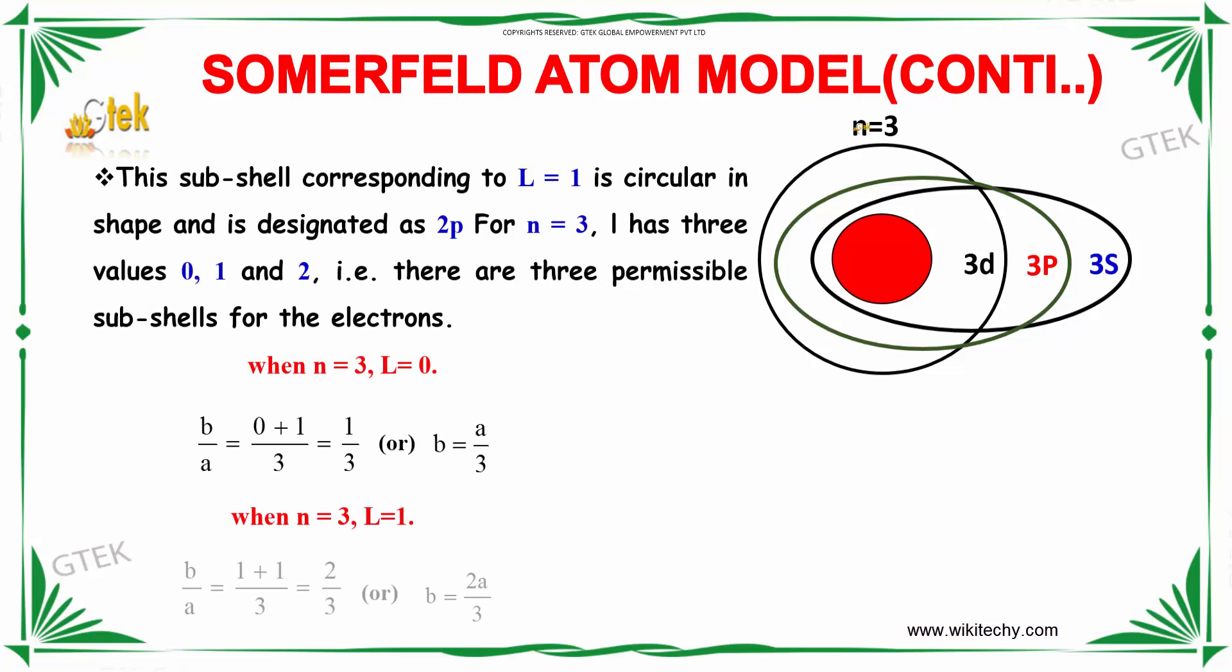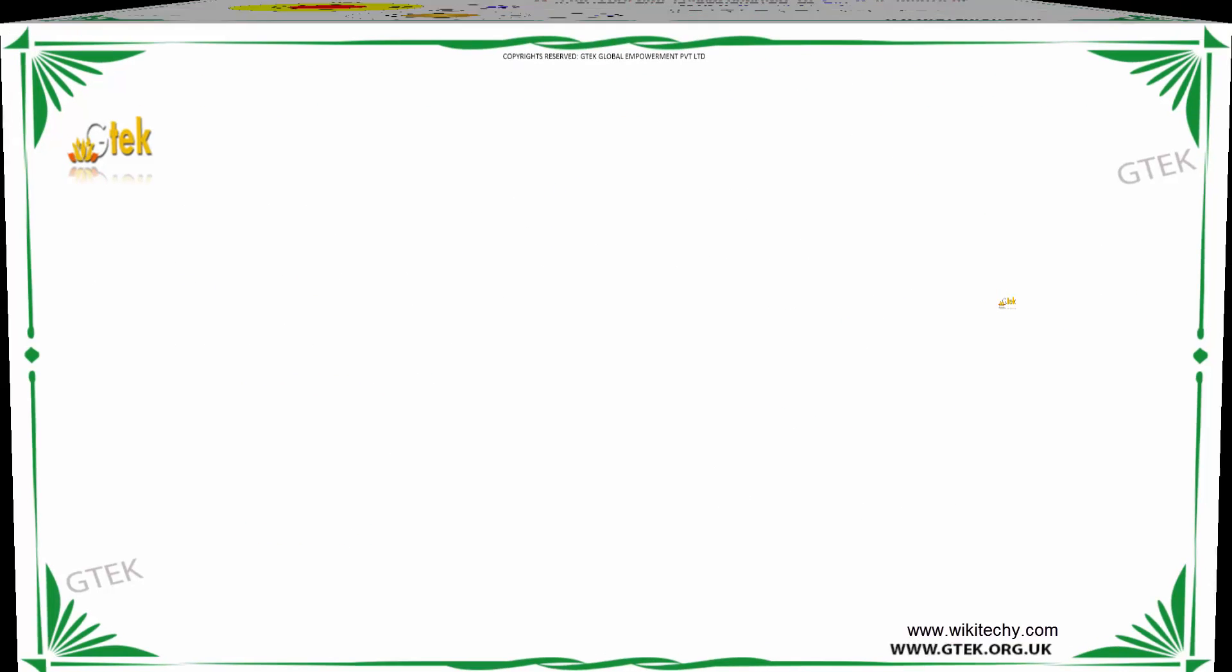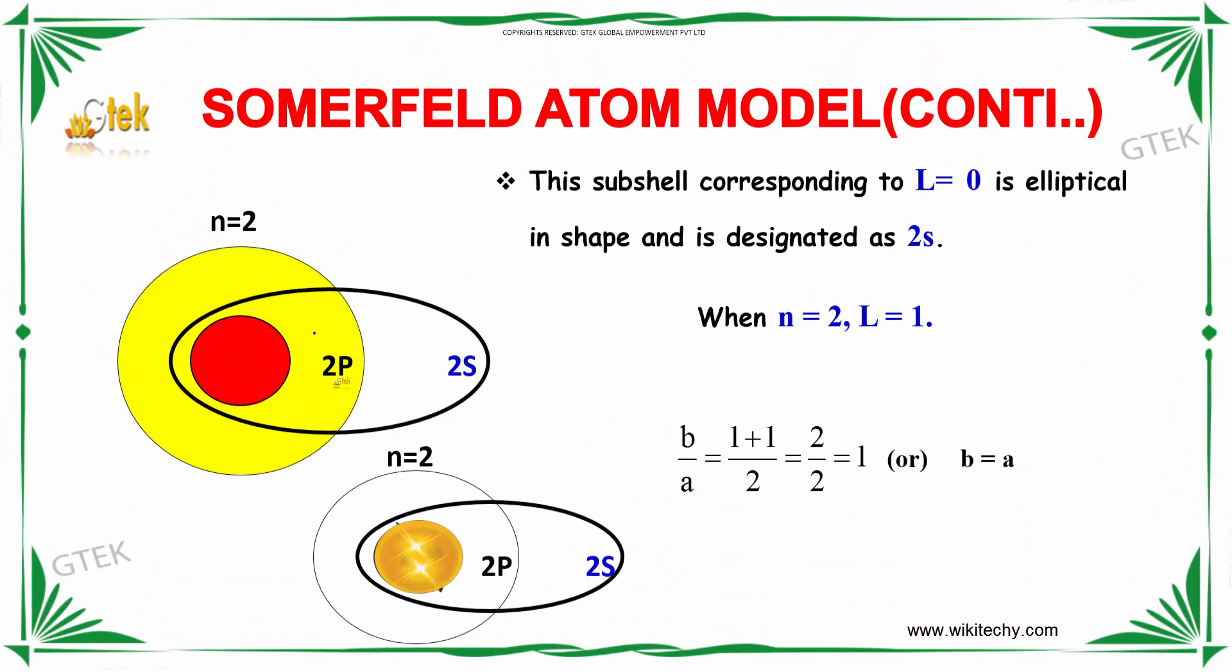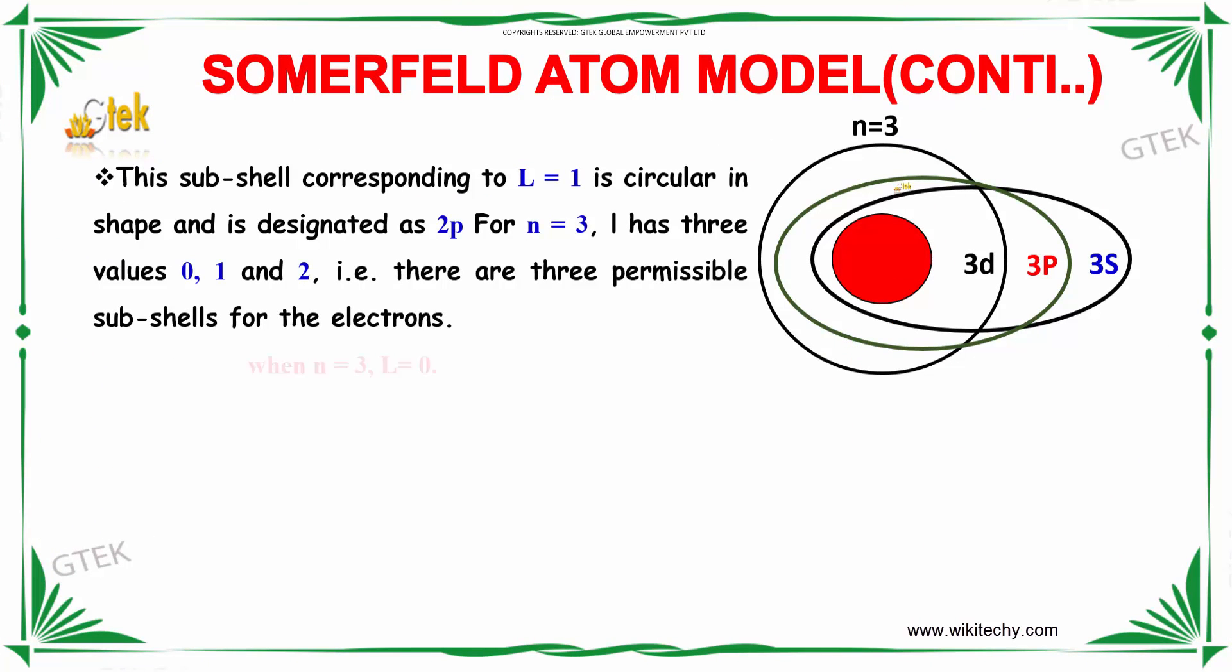Moving further, if n=3, L will have the values 0, 1, and 2. The permissible shapes are n=3 with L=0, n=3 with L=1, and n=3 with L=2. This is called 3s, 3p, and 3d. In the previous case we saw 2p and 2s because the n value was 2. Here the n value is 3, so 3d, 3p, and 3s.